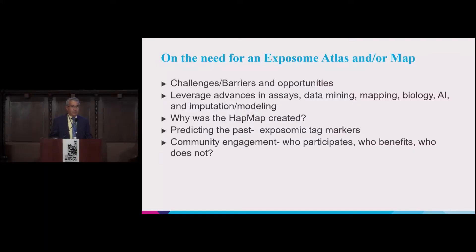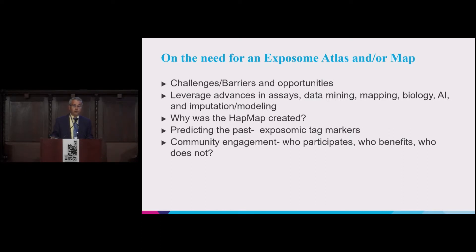On the need for an exposome atlas — atlases are books that contain multiple maps, so you can also think of this as an atlas. What are the challenges? What are the barriers? What are the opportunities in building such a map? How do we leverage advances in assays, data mining, mapping itself, biology, artificial intelligence, and imputation and modeling? I'm going to take a step back and talk about the HapMap project, and I'm going to propose that we could create what I'll call exposomic tag markers. I'll also talk about community engagement, who participates in an exposome map, who benefits, and who does not.